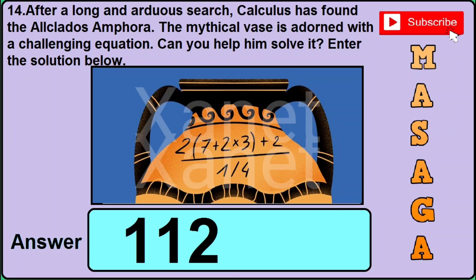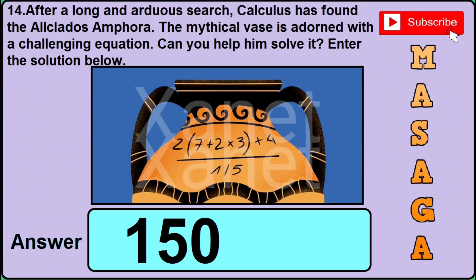Now in version 2 of this question the image is different — it is written here 2(7 + 2 × 3) + 2 ÷ (1/4). Then the correct answer will be 102. Now in version 3, the image reads 2(7 + 2 × 3) + 4 ÷ (1/5). Then the correct answer will be 150.